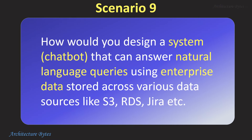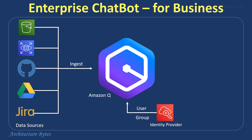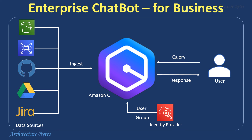How would you design a system that can answer natural language queries using enterprise data stored across various data sources like S3, RDS, Jira, etc.? Amazon Q is a good fit for this scenario. Amazon Q is an AI assistant that can generate comprehensive responses to natural language queries. It ingests your data for processing using its pre-built connectors to augment its knowledge base. It interprets user queries, refers to its knowledge base, and responds intelligently in natural language. With built-in security, end users only see the information that they have access to.